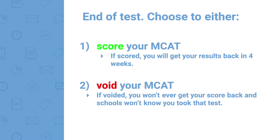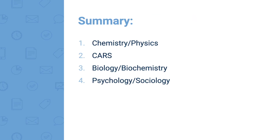After completing the PsychSoc section, you've reached the end of the test and have one last decision to make: either score your MCAT or void it. If you choose to score it, you'll get your results back in four weeks. If you void it, you won't ever get your score back — it'll be as if you never took the test. Schools will know you took it, but you'll never know how you did. People choose to void when they're not confident in how the test went.